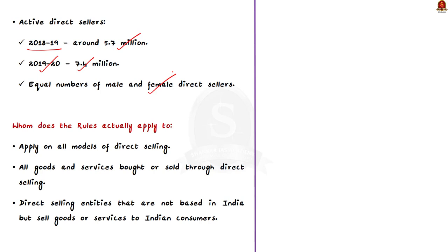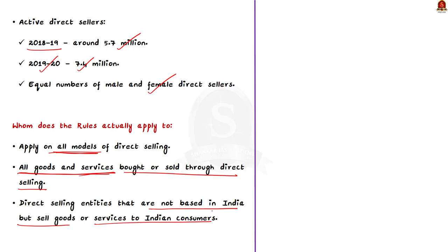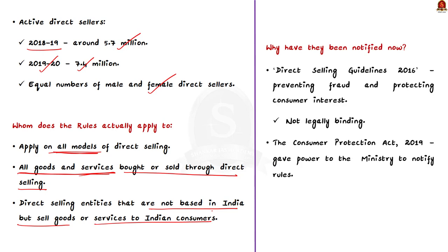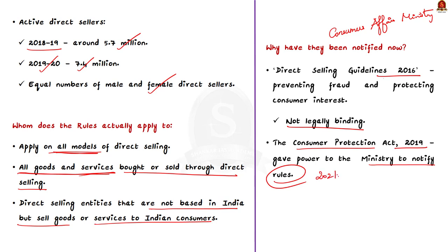These rules apply to all models of direct selling and all goods and services bought and sold through direct selling. Even entities not based in India but selling to Indian customers must follow the rules. Previously, the Consumer Affairs Ministry had issued Direct Selling Guidelines 2016, but these were not legally binding. With powers conferred by the Consumer Protection Act 2019, the ministry has now notified the Consumer Protection Direct Selling Rules 2021, largely in line with earlier guidelines but with additional compliance requirements.